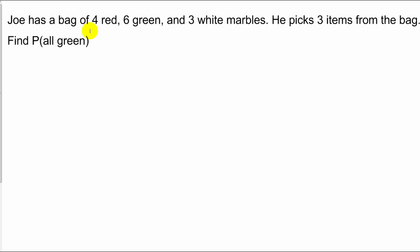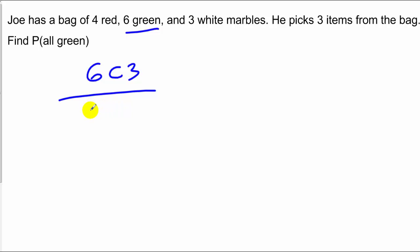In this next problem, a person has a bag of marbles: four red, six green, and three white. You pick three items from the bag and want to find the probability that all three are green. This is a combination-type problem because order doesn't matter. We only want to pick from our green subset, so we have 6 choose 3, over the total of 13 marbles — 13 choose 3. That gives us our probability.